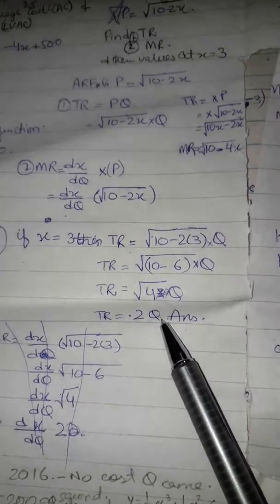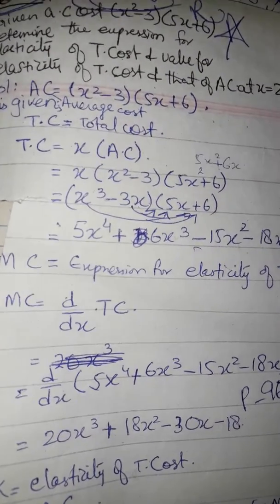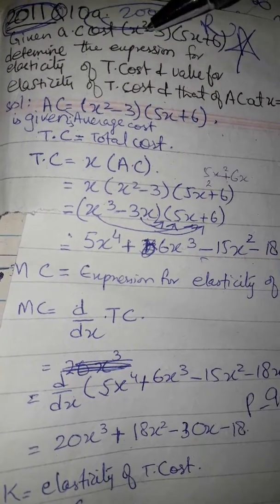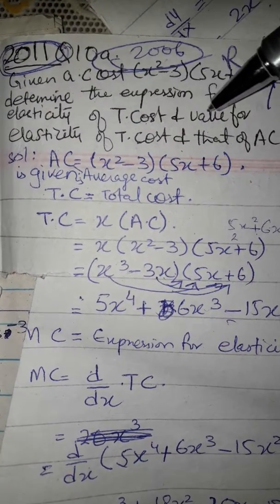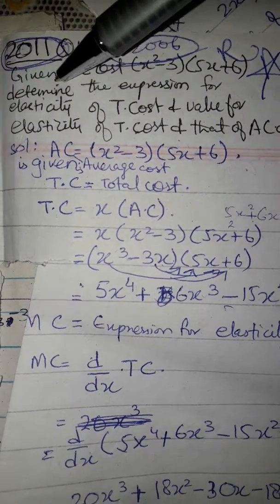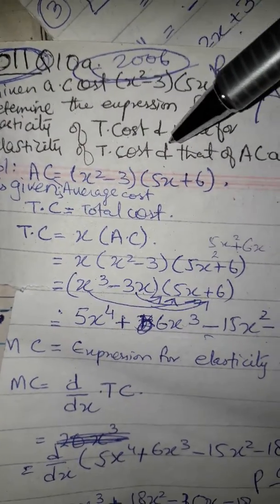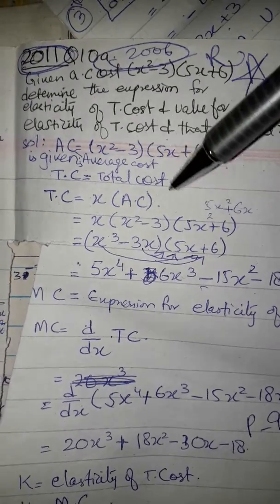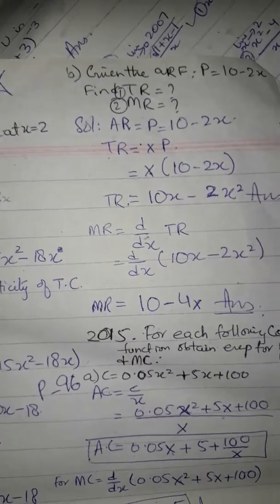Now coming to 2011 — the same question also appeared in 2006. This is a question on elasticity of total cost. Given average cost = x² minus 3.5x plus 6, determine the expression for elasticity of total cost and the value at x equals 2. Solutions are in the Salman Ahmed calculus book.